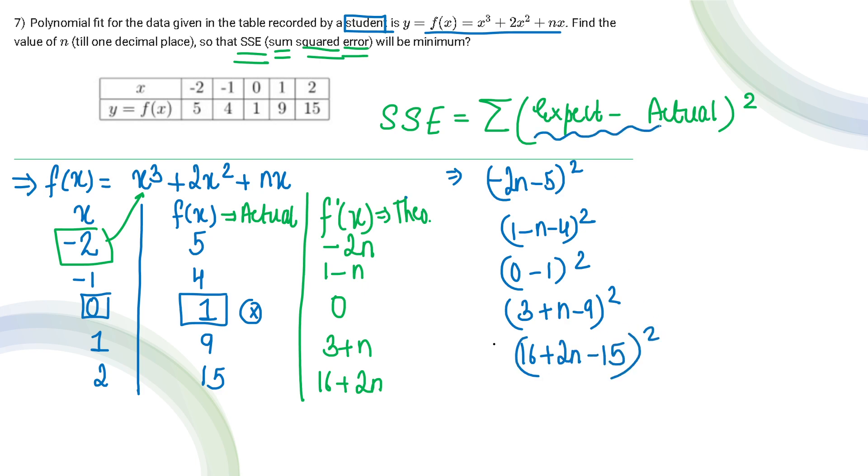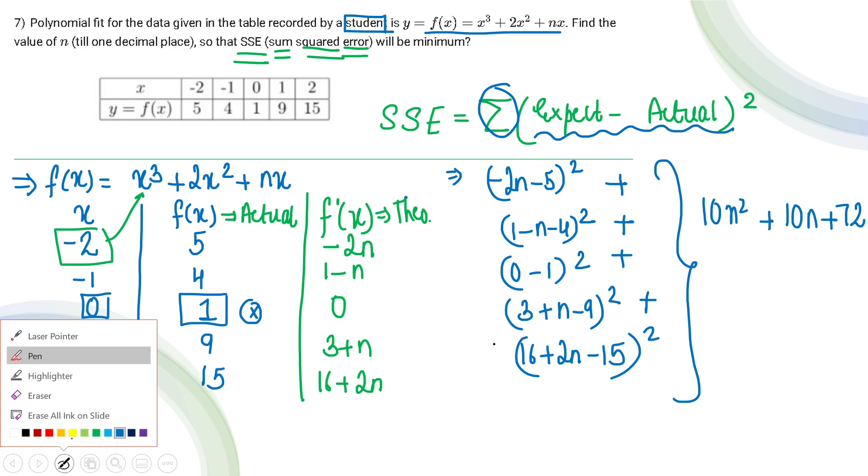So finally, let's add all these 5 terms. When I expand this and collect like terms together, we will get an expression: 10n² + 10n + 72. So basically, this is the expression of our SSE.